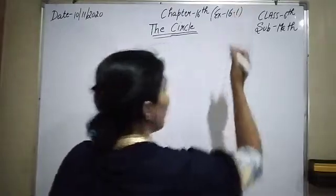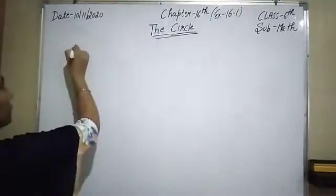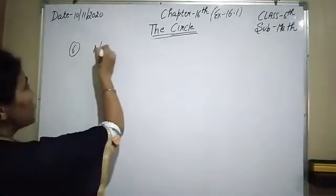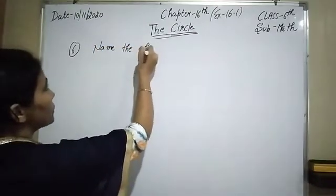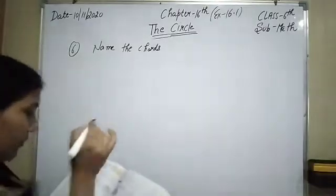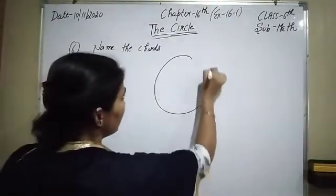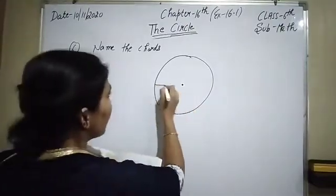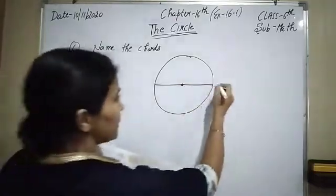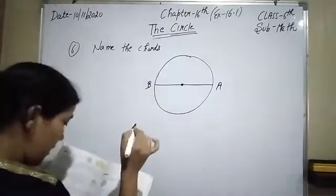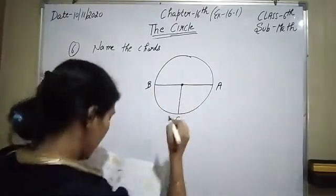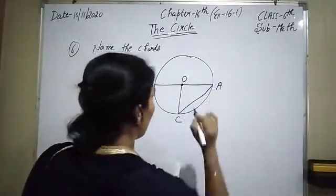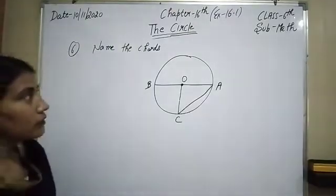Today I am going to start from the sixth question. The statement of the sixth question is: name the chords in the figure below. Here is the figure given — a circle with a center, a diameter, and points A, B, and C. The center point is O and here is AC.